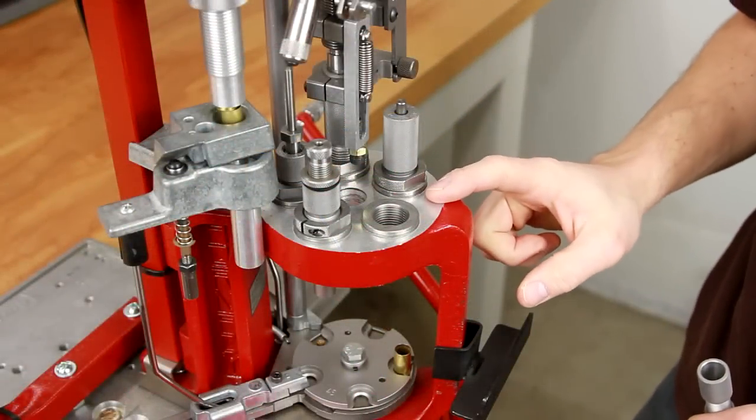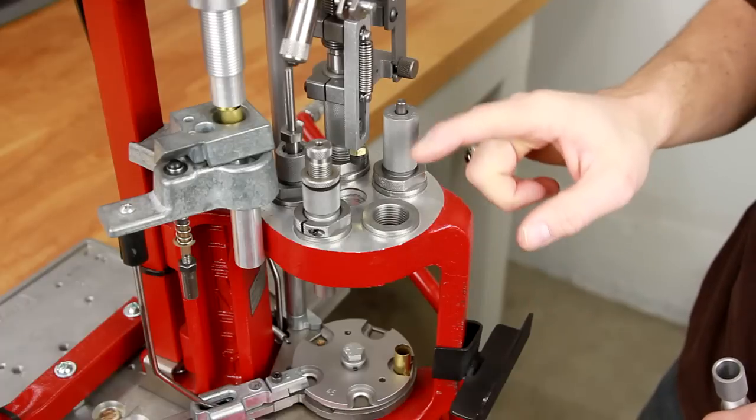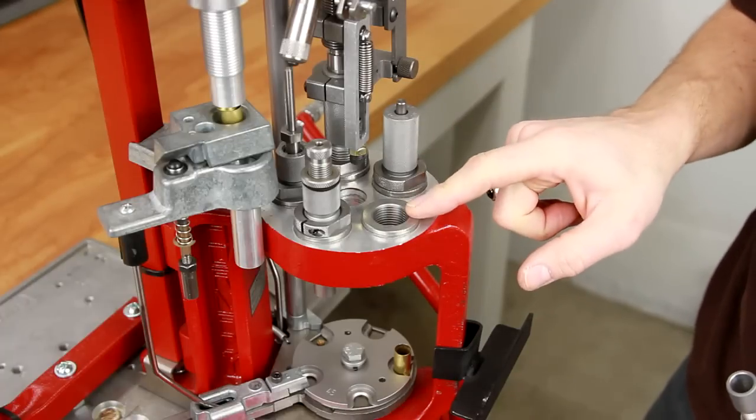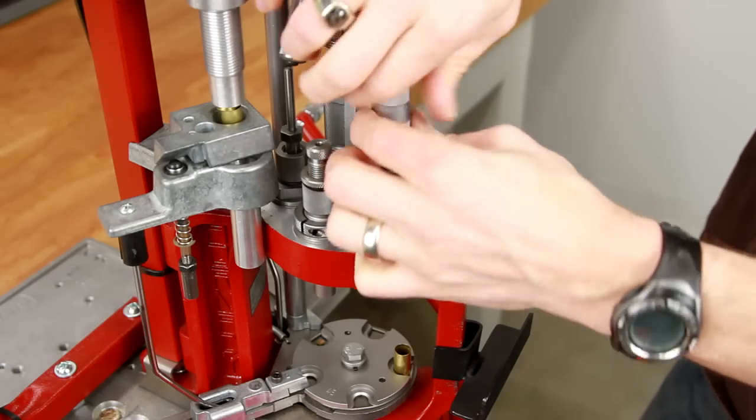Now that we've assembled the bullet feed die, it's time to install it in the press. In station number four I've got a lock and load bushing that's been installed and we're going to screw the die down.